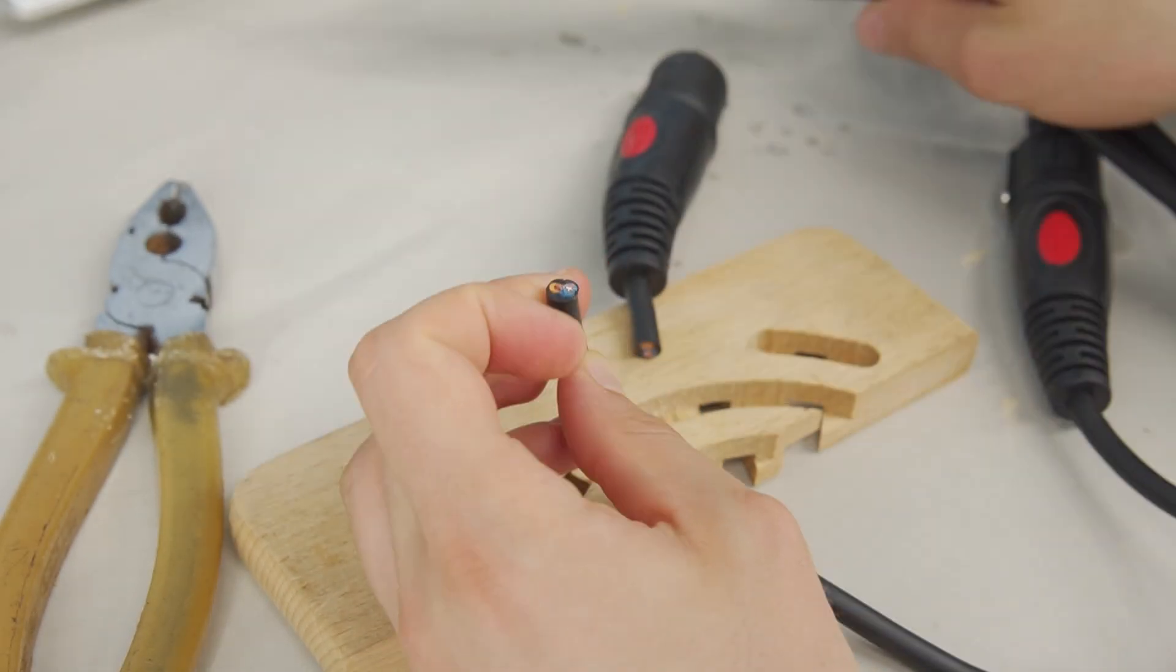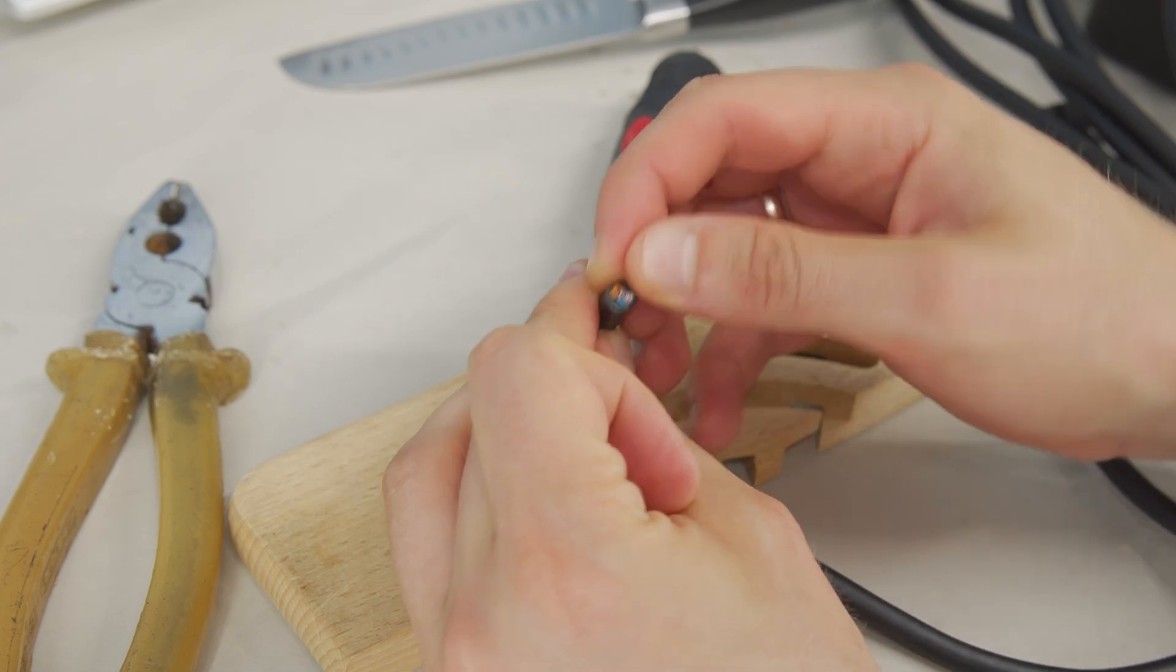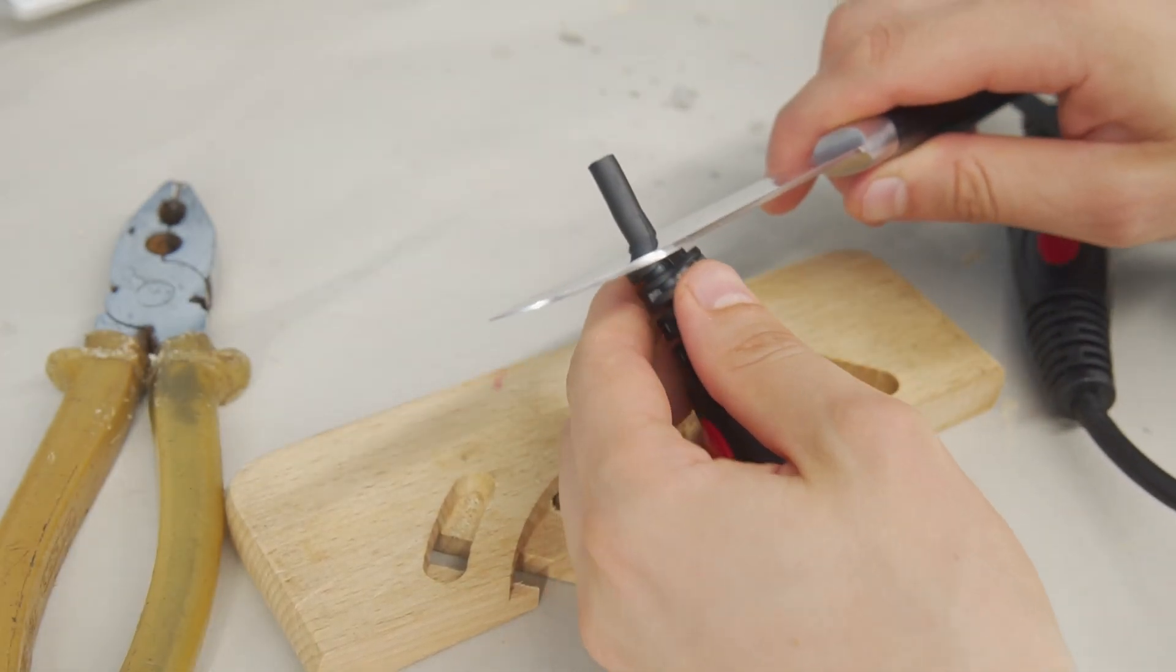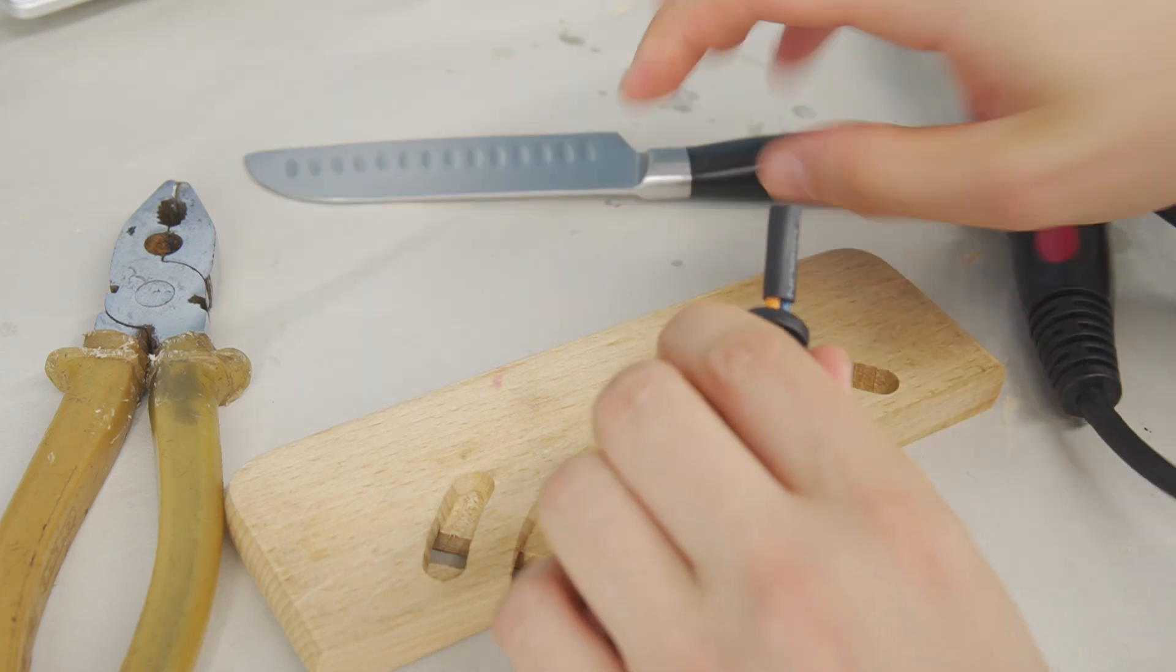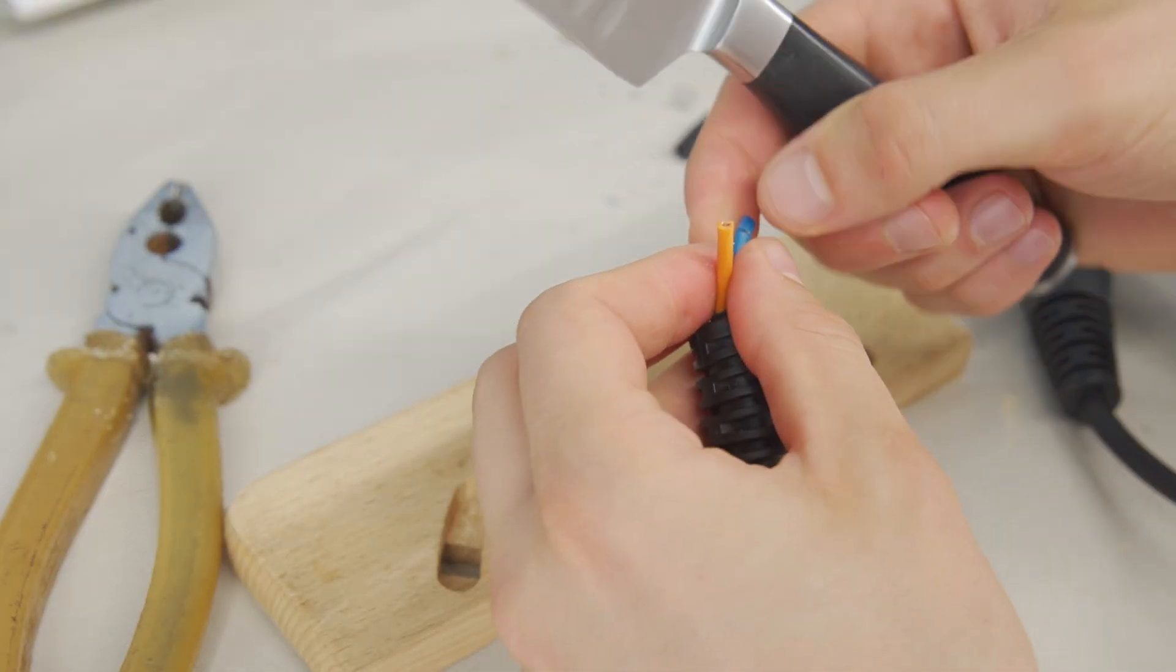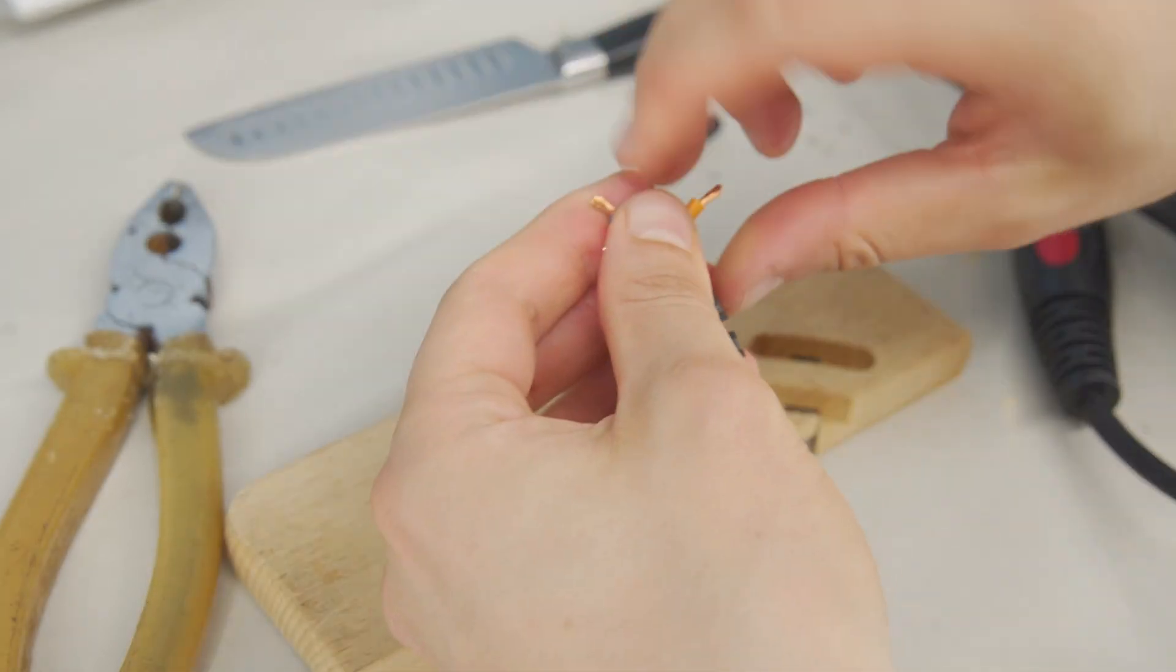To find out which wire color is for the positive and which is for the negative contact, carefully remove the cable's outer jacket without damaging the internal wires. Then remove a few millimeters of insulation from each wire and twist the copper strands together.